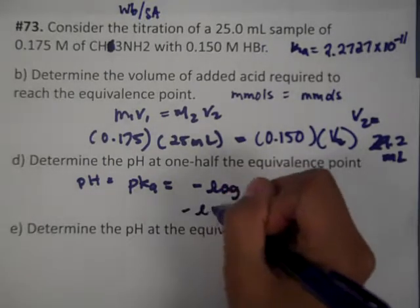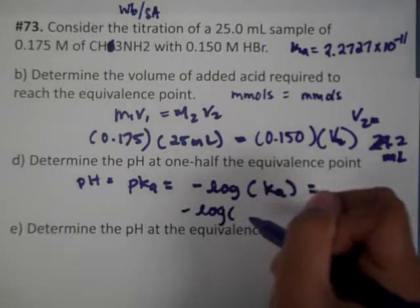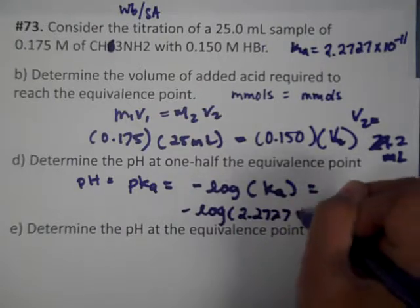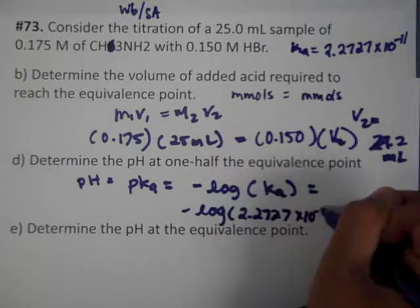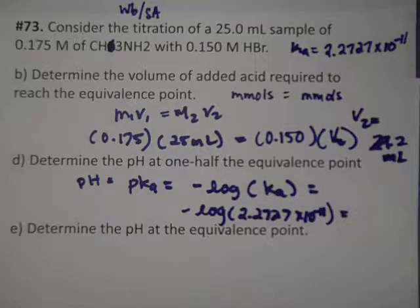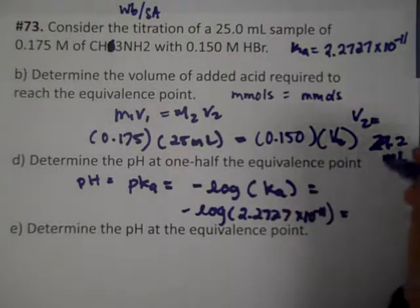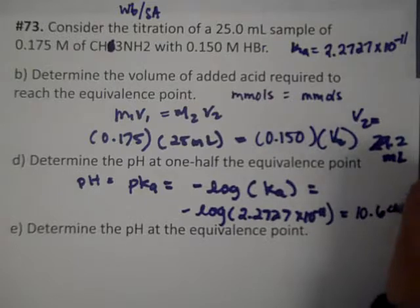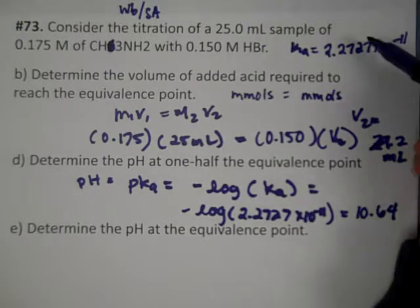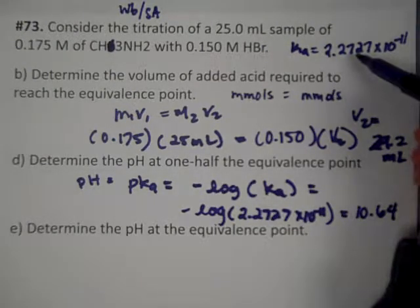We take the negative log of 2.27 × 10⁻¹¹, and that is equal to 10.64.